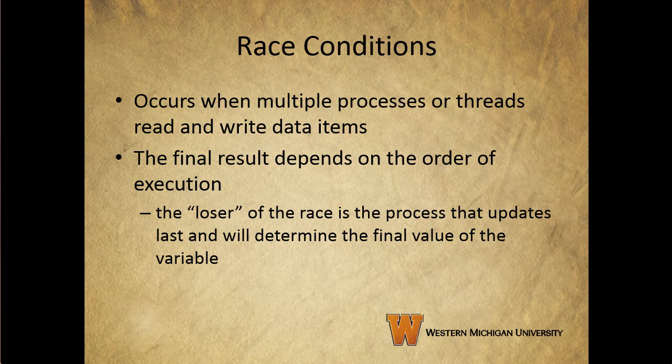A race condition occurs when multiple processes or threads read and write data items such that the final result depends on the order of execution of instructions across the multiple processes. For example, suppose two processes share the same global variable A. The first process updates A to value 1, and the second process updates A to value 2. The two tasks race to write variable A, and the loser of the race — the process that updates last — determines the final value of A.